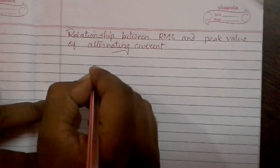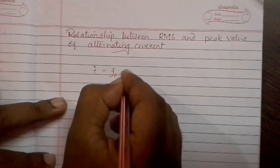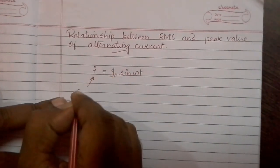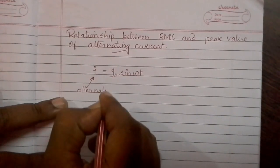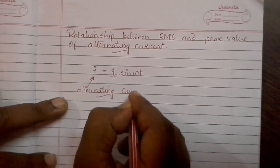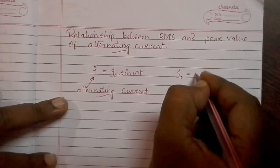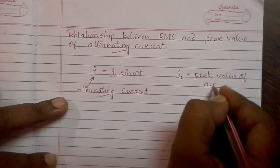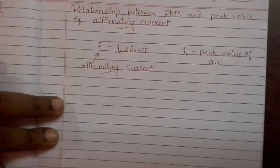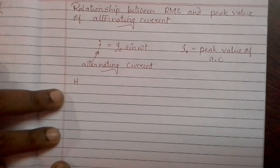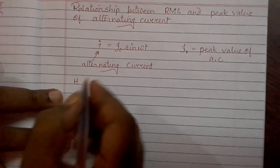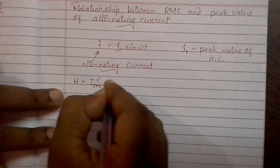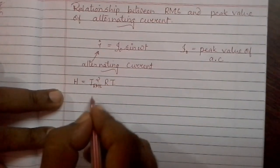We also know that I equals I₀ sin(ωt), where small i is the alternating current and I₀ is the peak value of current. Let us write that heat generated in a DC circuit for a time t: H equals I_rms squared into R into T. Let us draw the circuit diagram for that also.